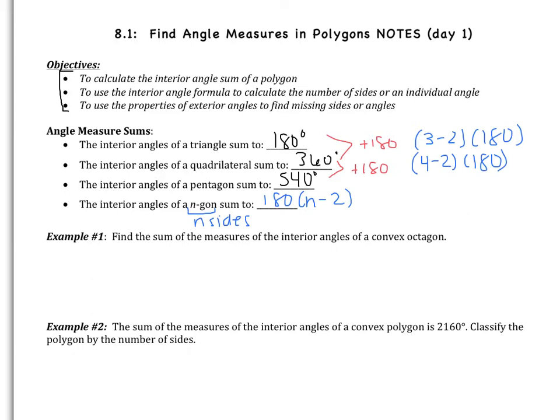Let's look at example 1. Find the sum of the measures of the interior angles of a convex octagon. Octagon, that's what's important. Remember that an octagon has eight sides. So in order to find the sum, I'm going to do 180 multiplied by 8 subtract 2. 8 subtract 2 is 6. So I'm really doing 180 multiplied by 6, which is 1080 degrees. So all of the interior angles of a convex octagon are going to add to be 1080 degrees.